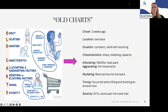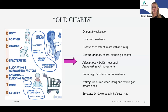A mnemonic taught in school is OLD CHARTS: Onset, Location, Duration, Characteristics, Alleviating and Aggravating factors, Radiating and Relieving, and Timing and Severity. We interviewed him: pain began two weeks ago, located in his low back, constant with some relief when reclining. Pain is sharp and stabbing with muscle spasms. NSAIDs and a heat pack help; all movements aggravate it. It radiates as a band across his low back. It occurred while lifting and twisting an Amazon box at work. Severity is 9 out of 10.